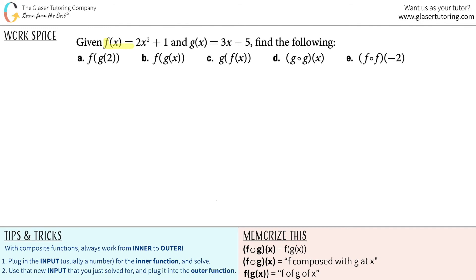Given f of x equals 2x squared plus 1 and g of x equals 3x minus 5, find the following, and then we have five examples, a through e.